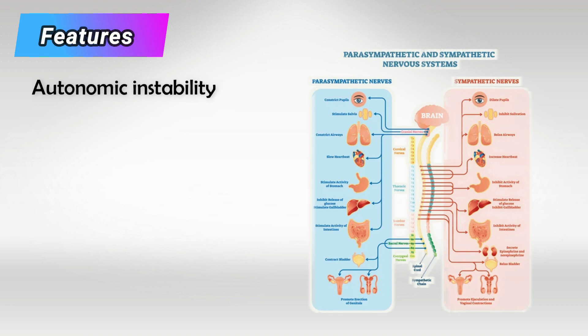Sometimes the sympathetic system is activated where it shouldn't, and other times the parasympathetic is activated elsewhere. For example, the patient might present with urinary incontinence due to activation of the sympathetic system in the genital tract, and at the same time have bradycardia due to parasympathetic activation in the heart — so, autonomic dysfunction.